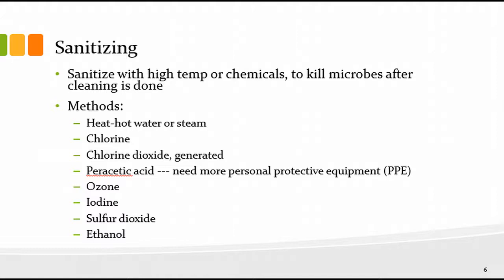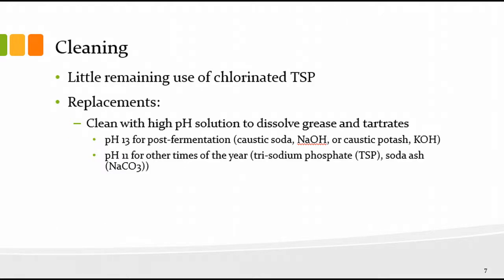Or you can use ethanol. Or you can use something like ProxyCarb, which are high-pH sanitizing solutions. Trisodium phosphate is a high-pH solution — we used it with chlorine, so we used chlorinated trisodium phosphate. But you can use just trisodium phosphate, and that's listed here on the slide as one of the lower-pH choices, around pH 11, for sanitizing.